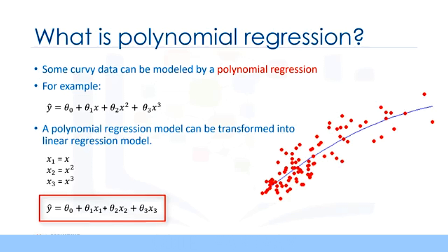Therefore, this polynomial regression is considered to be a special case of traditional multiple linear regression. So you can use the same mechanism as linear regression to solve such a problem.